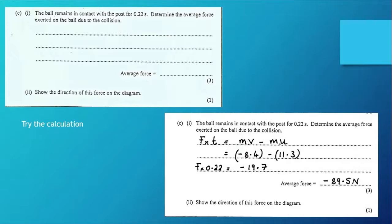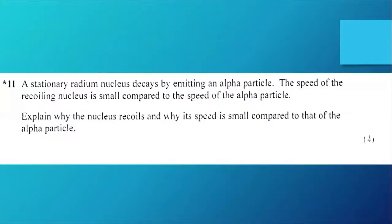Here's another past exam question. A stationary radium nucleus decays by emitting an alpha particle. The speed of the recoiling nucleus is small compared to the speed of the alpha particle. Explain why the nucleus recoils and why its speed is small compared to that of the alpha particle. Well, the radium nucleus has much more mass than the alpha particle with its two protons and two neutrons. So how can we tackle this question? We're given four marks available.